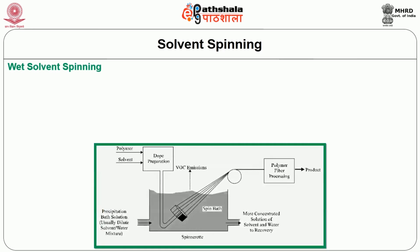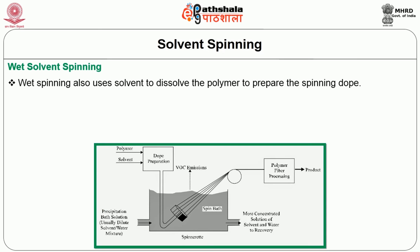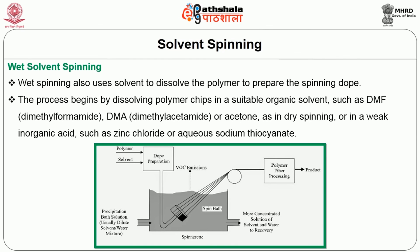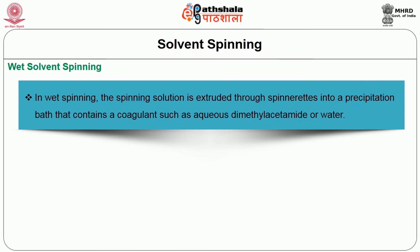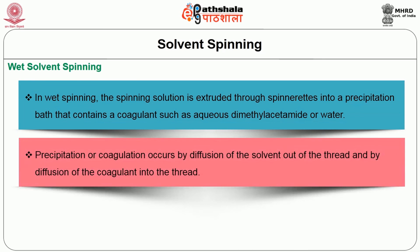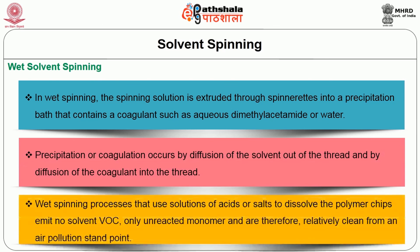Next is wet solvent spinning. Wet spinning also uses solvent to dissolve the polymer to prepare the spinning dope. The process begins by dissolving polymer chips in a suitable organic solvent such as DMF, DMA or acetone, or in weak inorganic acids such as zinc chloride or aqueous sodium thiocyanate. In wet spinning, the spinning solution is extruded through a spinneret into a precipitation bath containing a coagulant such as aqueous dimethyl acetamide or water. Precipitation or coagulation occurs by diffusion of the solvent out of the thread and by diffusion of the coagulant into the thread. Wet spinning processes that use solutions of acids or salts to dissolve the polymer emit no solvent, only unreacted monomer, and are therefore relatively clean from an air pollution standpoint.